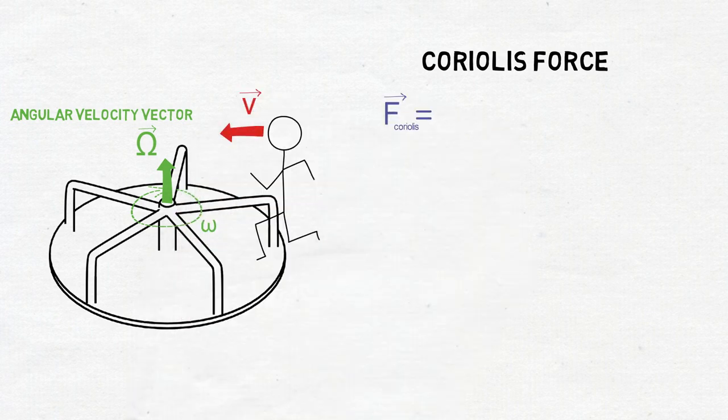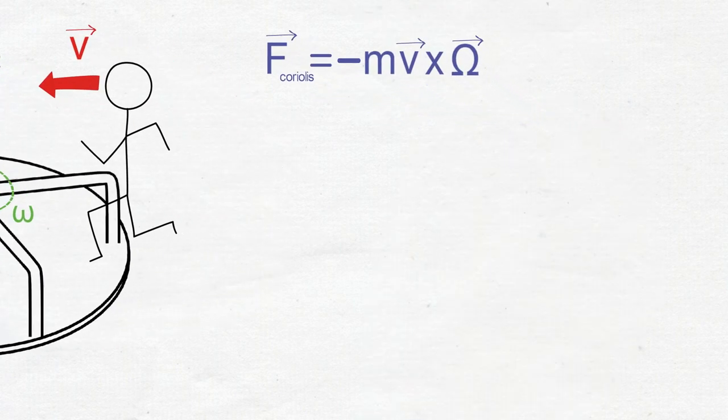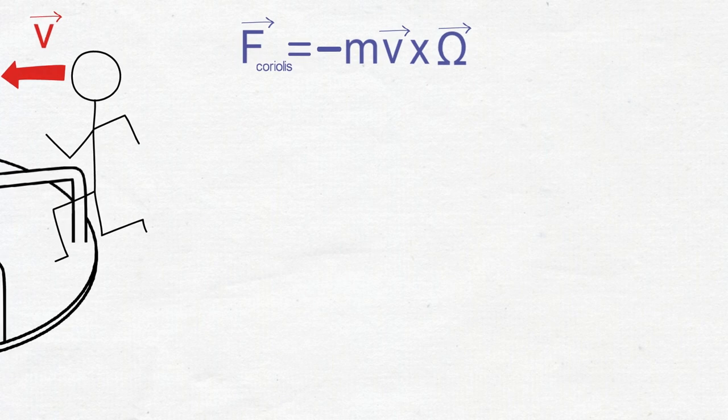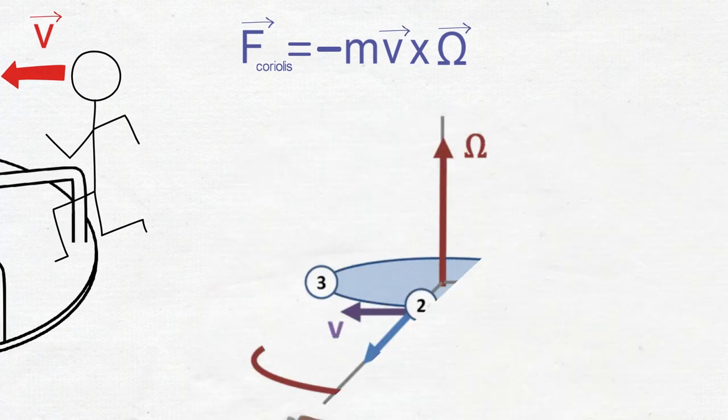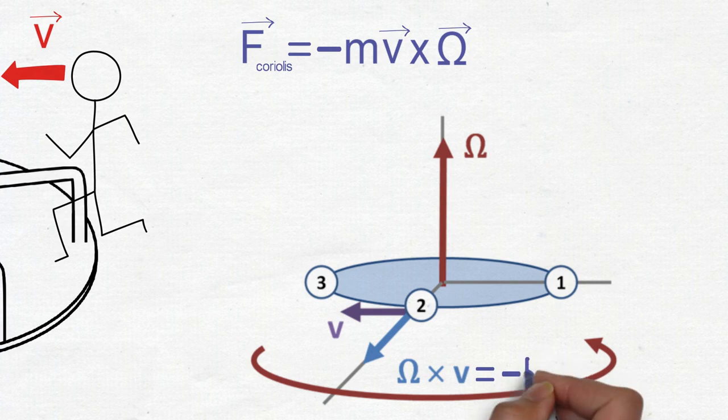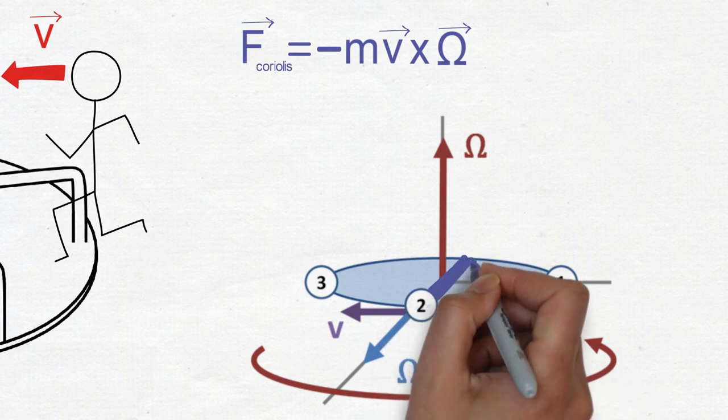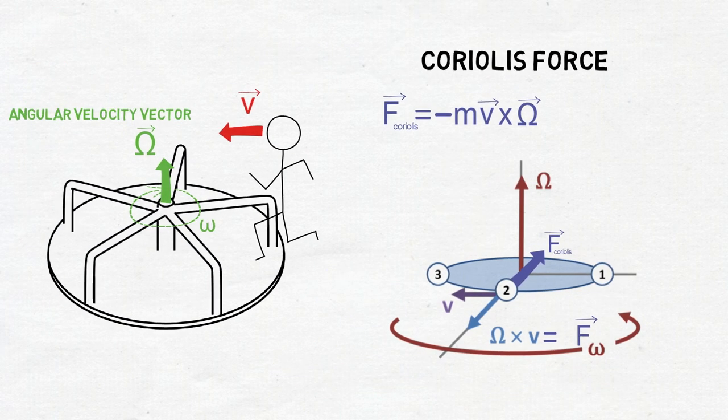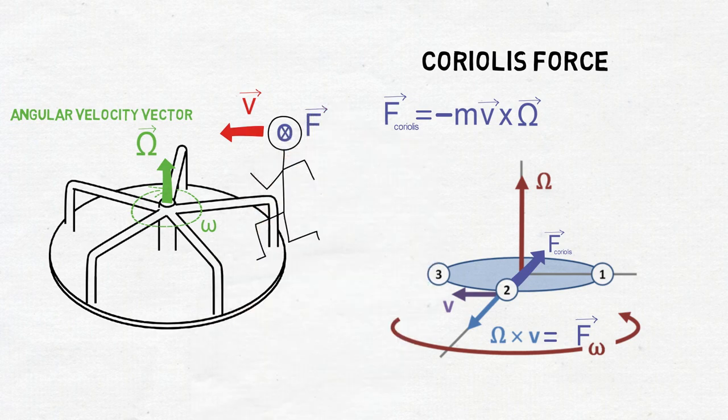There will be a fictitious force, the Coriolis force acting on him, which is given by negative m times v cross omega. We'll need to use the right-hand rule because of the cross product. The negative sign in the equation means that the Coriolis force is pointing in the opposite direction. So in this case the Coriolis force will be pointing inwards.